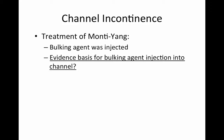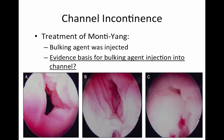In our particular case of Monti-Yang channel incontinence, minimally invasive therapy was pursued through bulking agent injection. Panel A shows the appearance of the continence mechanism before bulking agent injection, panel B shows the appearance during injection — you can see the needle at the 6 o'clock position — and panel C shows the final result after the bulking agent has been injected.